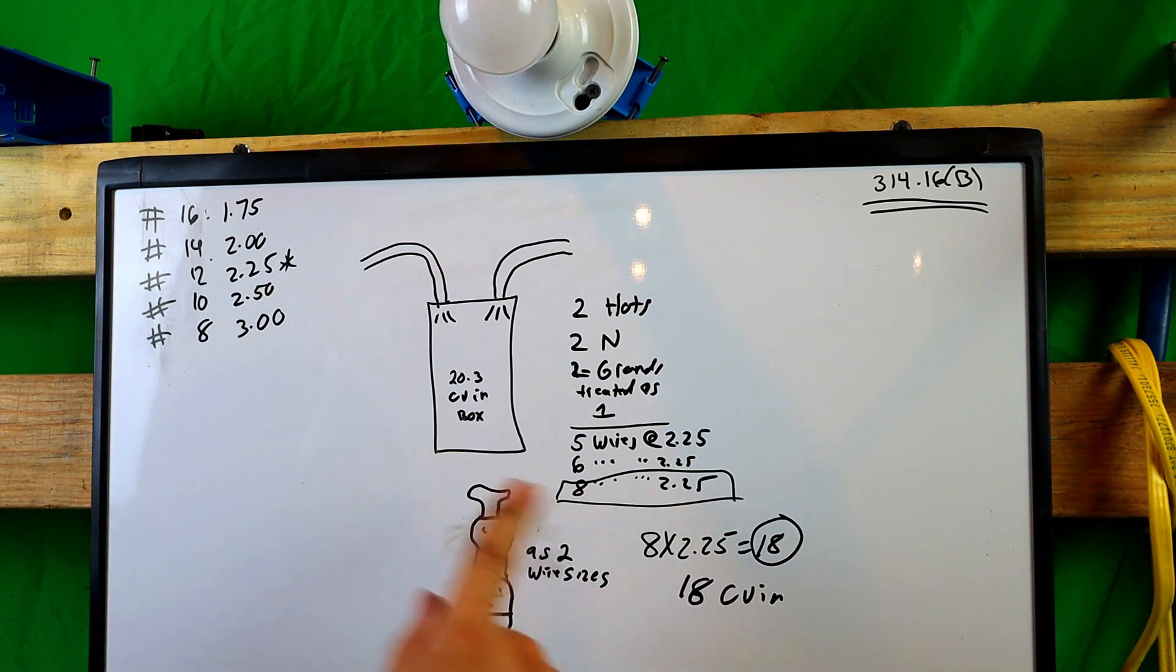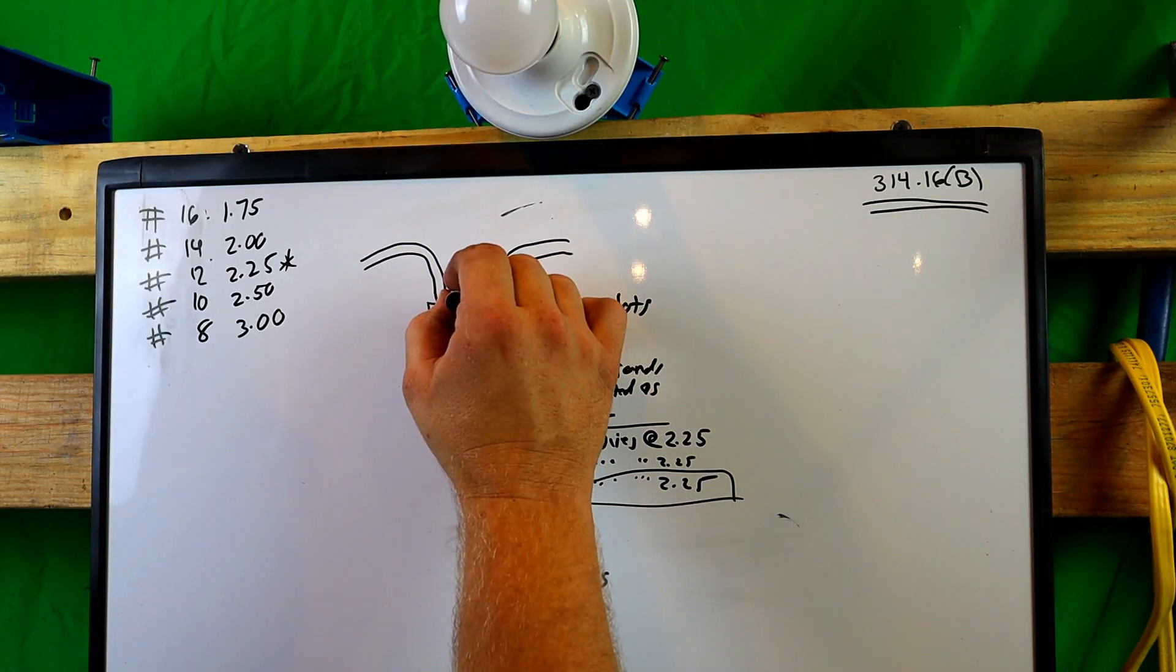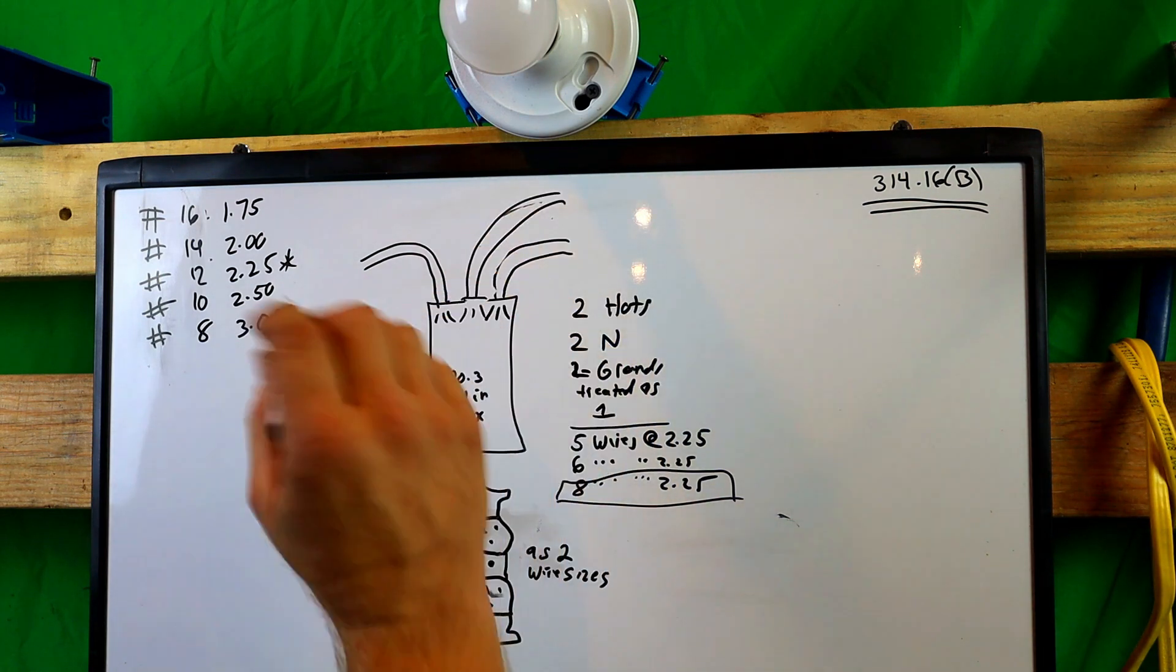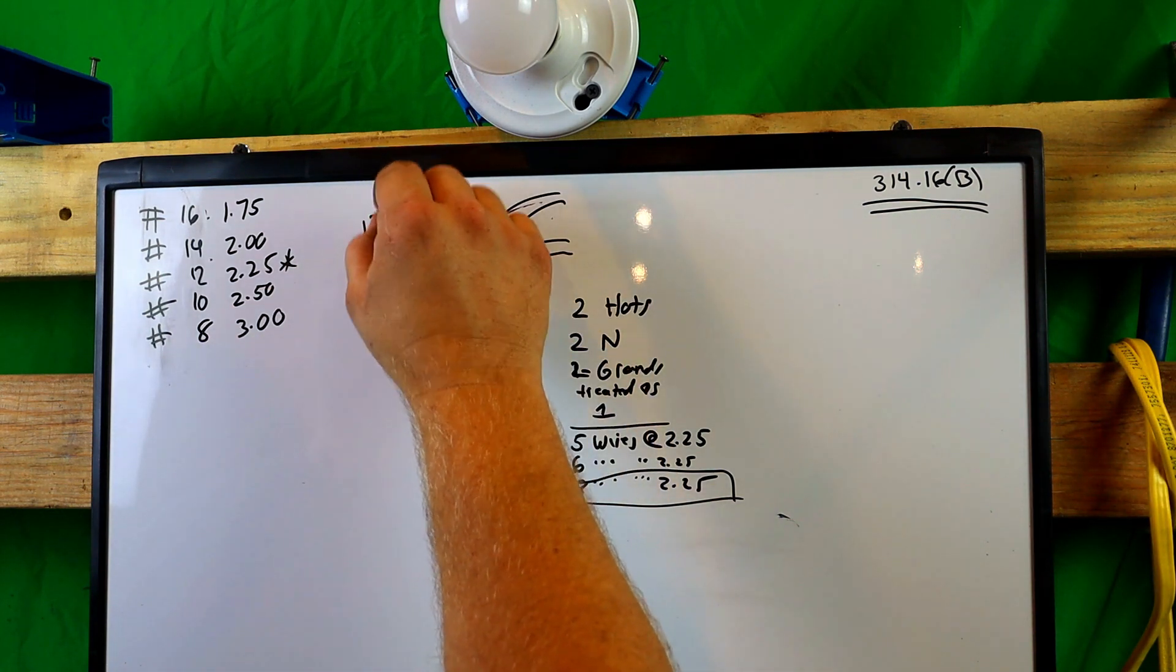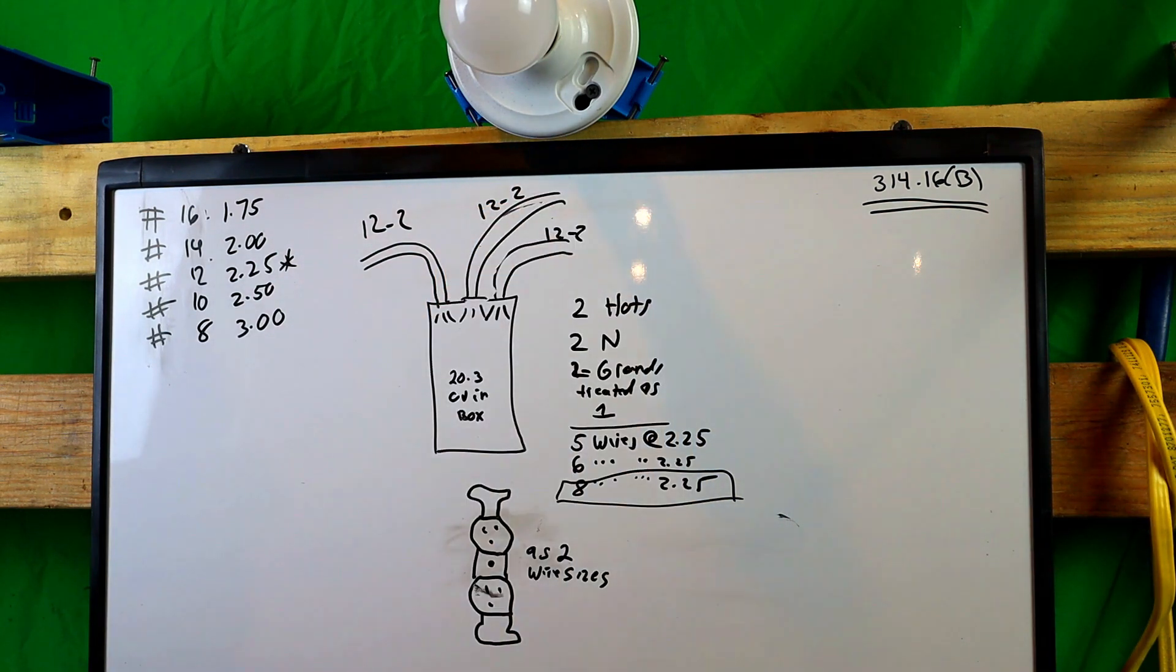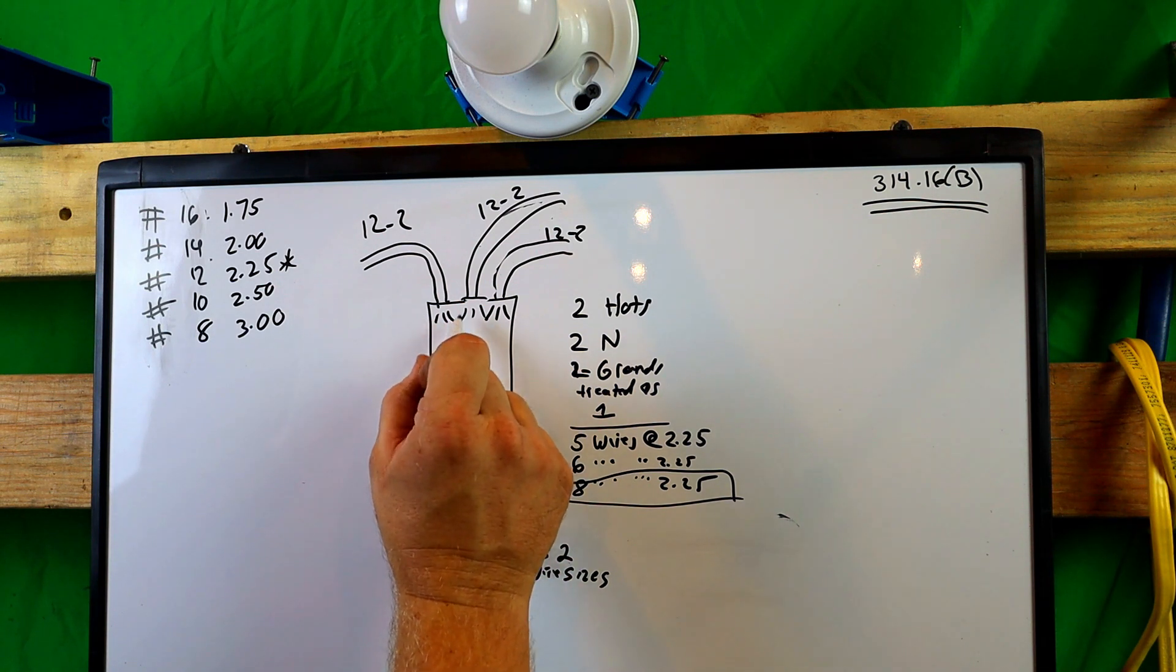Now let's take this one step further. We'll use the same box. Alright. We'll use this same setup here. We have one device. Let's go ahead and erase this. And let's assume we have another Romex cable coming out, all in 12 gauge. So this is 12-2, this is 12-2, and this is 12-2. Alright. Now, now we have one, two, three, four, five, six current carrying conductors.